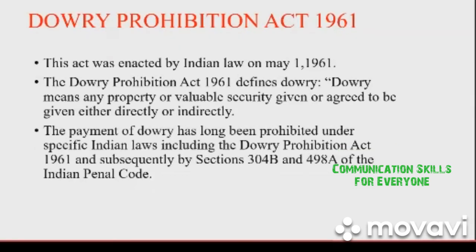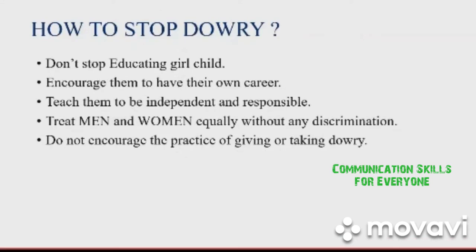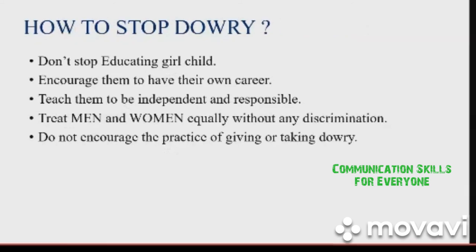Section 498A states that if a bride files a complaint against the bridegroom's family in a dowry matter, then action will be taken. How to stop dowry: Start educating the girl child. Encourage them to have their own career. Teach them to be independent and responsible. Treat men and women equally without any discrimination. Do not encourage the practice of giving or taking dowry.